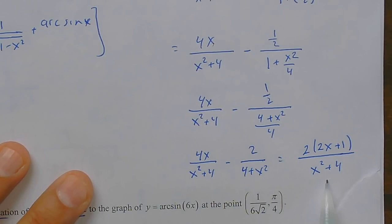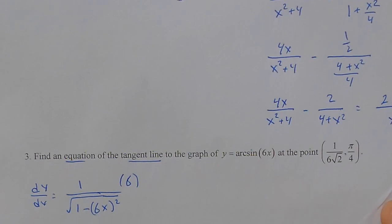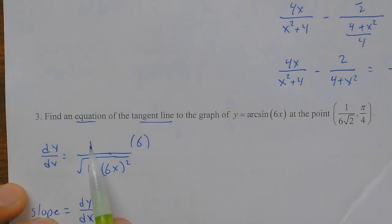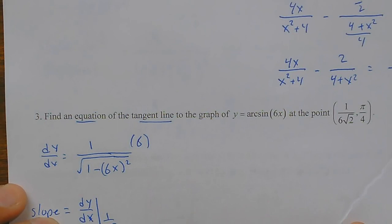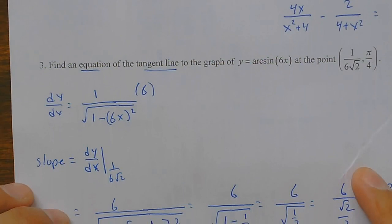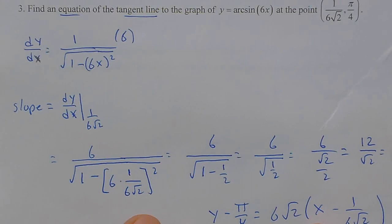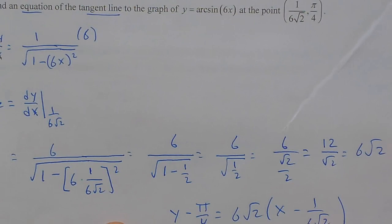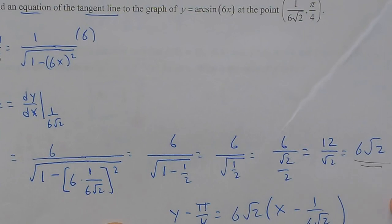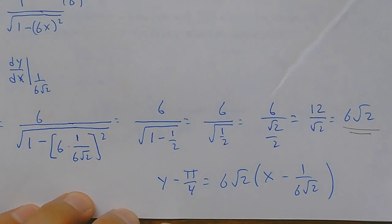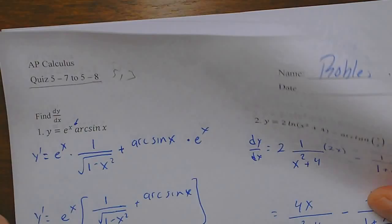Number three asks for the equation of the tangent line. The derivative of arc sine is one over the square root of one minus u squared, times the derivative of u by the chain rule. The slope equals the derivative evaluated at the x-coordinate. After substituting in the x value, that involves a lot of algebra. Do not distribute — leave the equation as is.